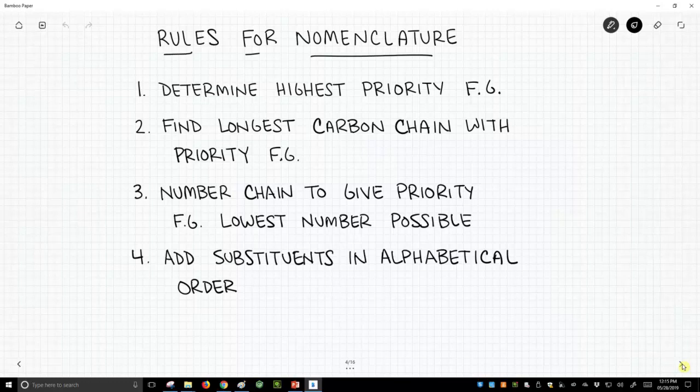Our first step in naming a molecule is determining what the highest priority functional group is. Once we know what the highest priority functional group is, we need to find the longest continuous carbon chain in our molecule that contains our key functional group.